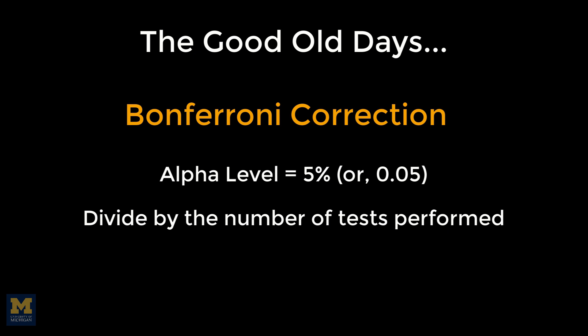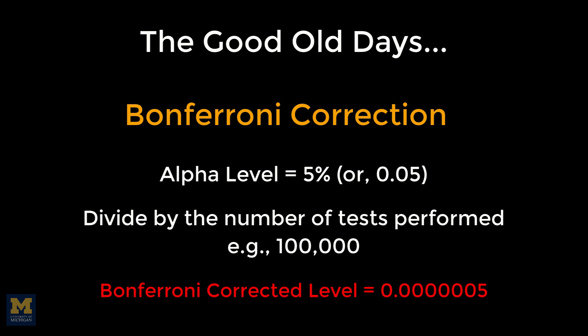This works well enough for behavioral studies, but quickly becomes unreasonable when applied to imaging data. For example, if your group level contrast map contains 100,000 voxels and your alpha level is .05, an individual voxel will have to pass a significance threshold of .0000005 in order to be judged statistically significant.